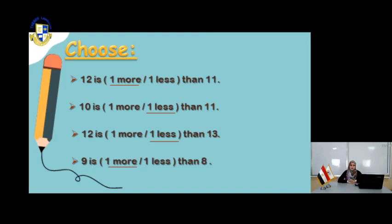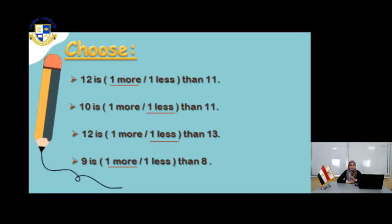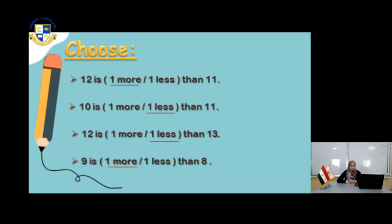Let's choose together in this page. 12 is one more or one less than 11. Count in your mind: 1, 2, 3, 4, 5, 6, 7, 8, 9, 10, 11, 12. So 12 is one more than 11. That's right, it's one more. The next one: 10 is one more or one less than 11. Number 10 is one less than 11. That's right.